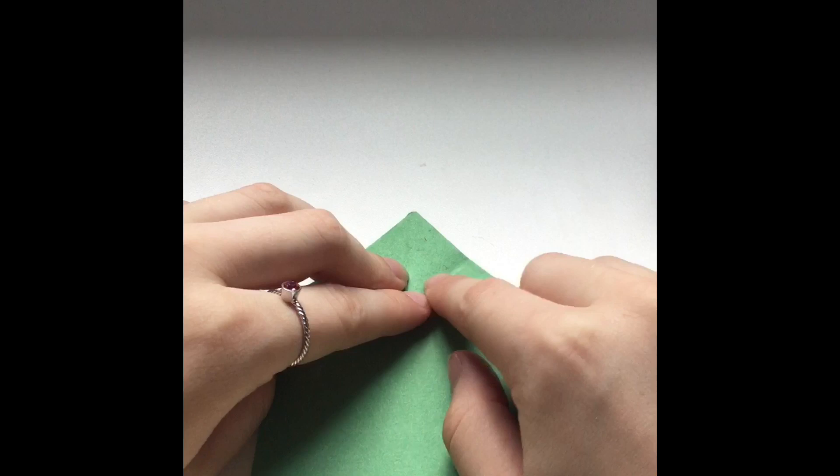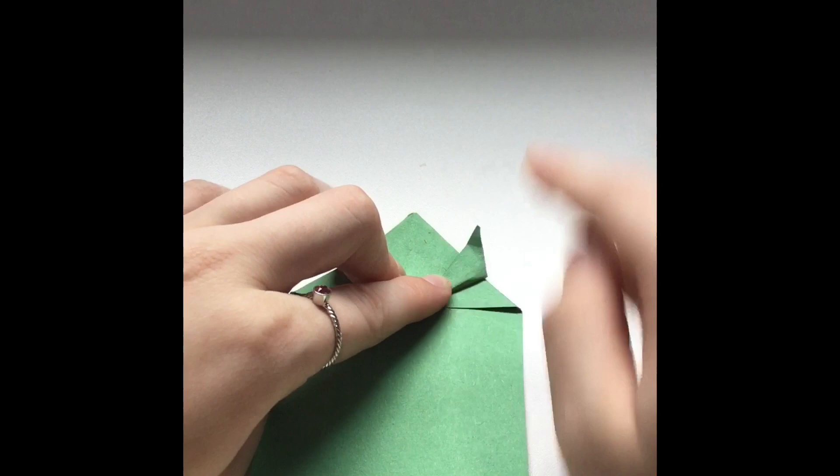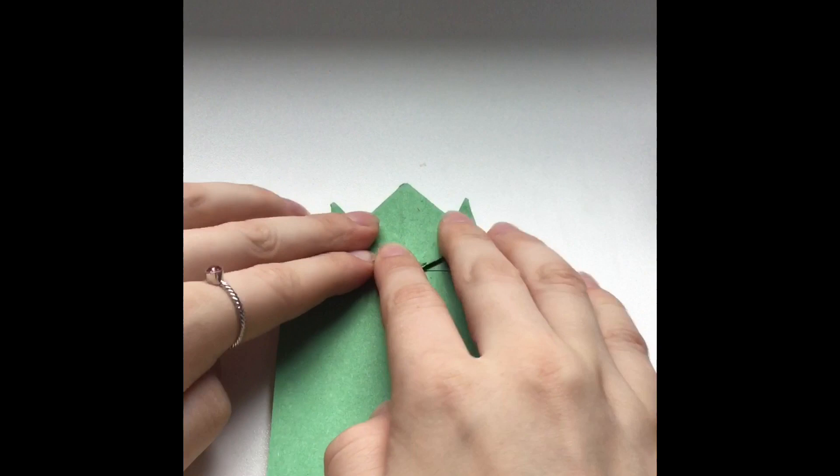So you see where I made the crease right there? You are going to take these little flaps and fold them along there. And then do the same thing on the other side.